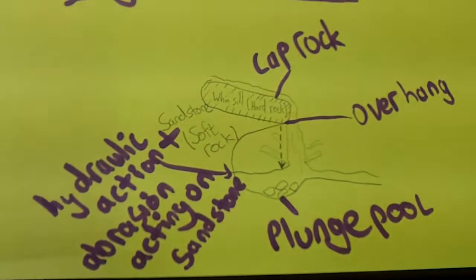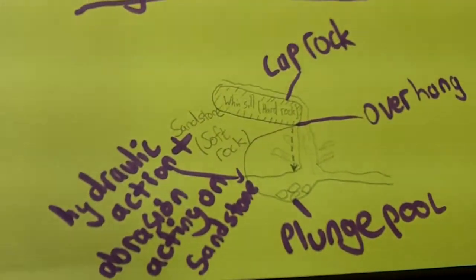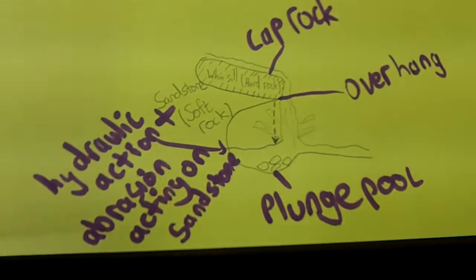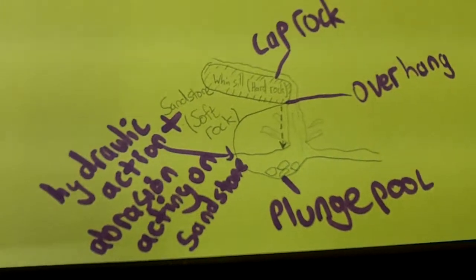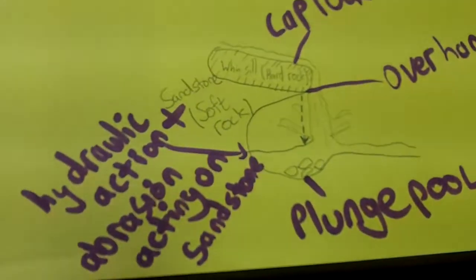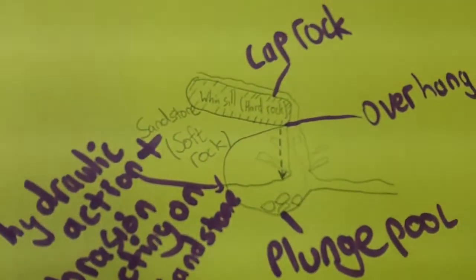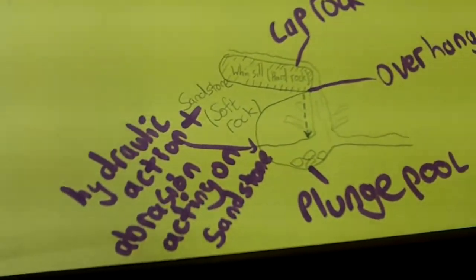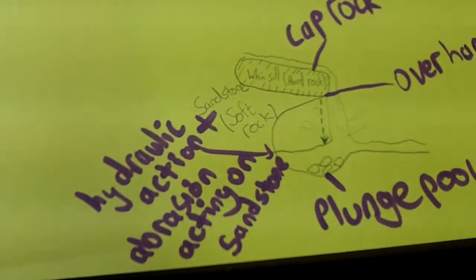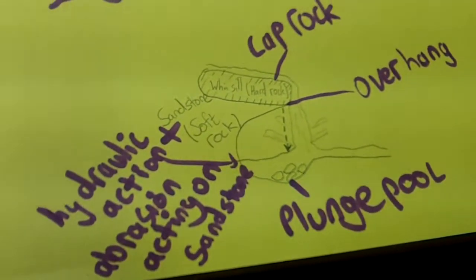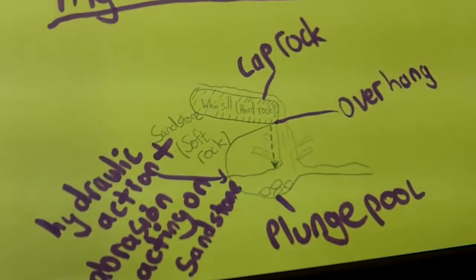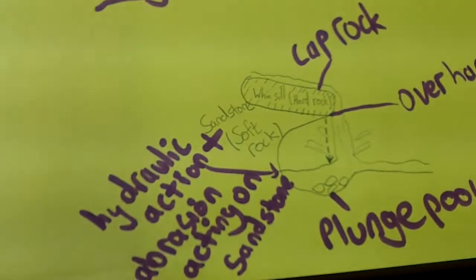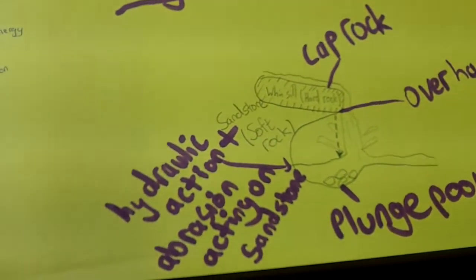The plunge pool eventually makes an overhang. As a result, the hard rock doesn't have enough support to hold itself up. Gravity takes over and breaks part of it off, so the overhang breaks and falls into the plunge pool. More abrasion takes place and the process happens again, resulting in headward erosion.